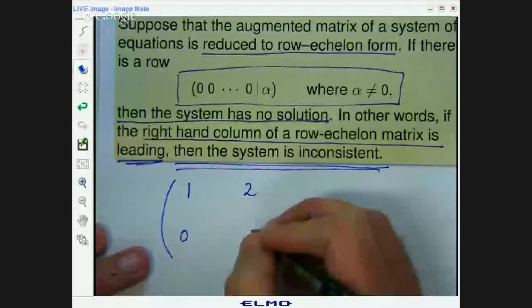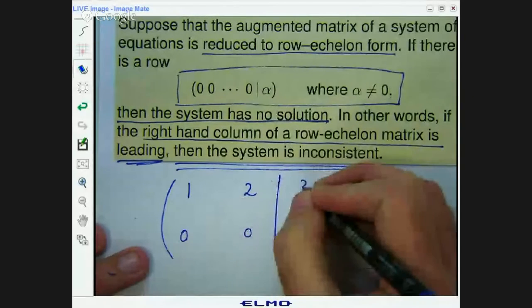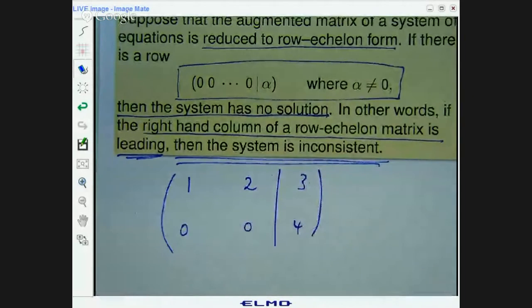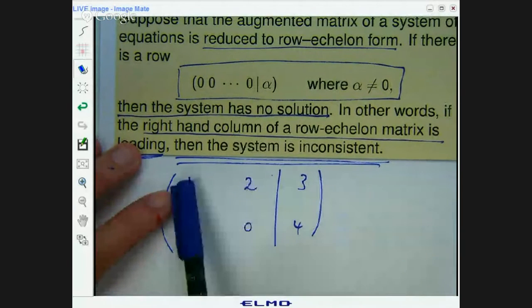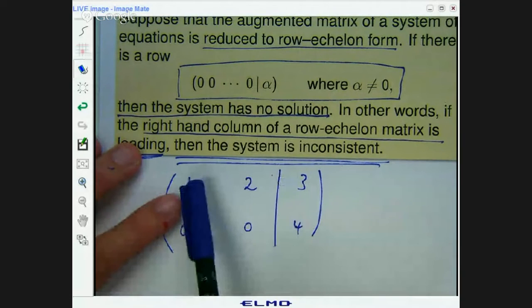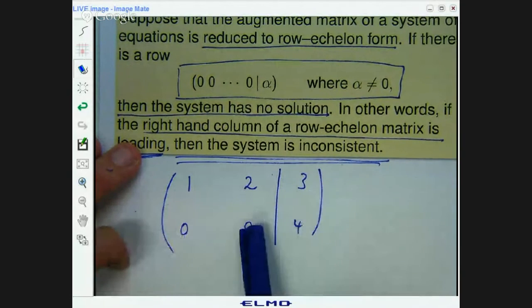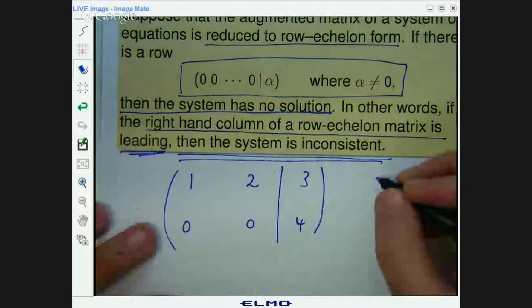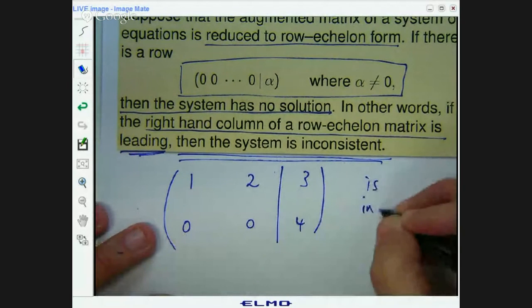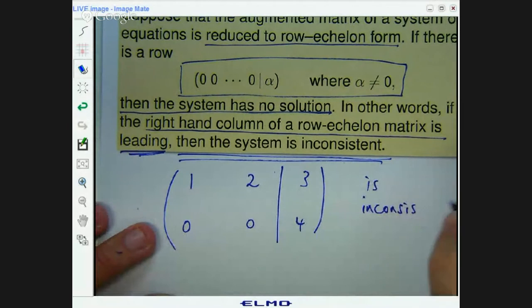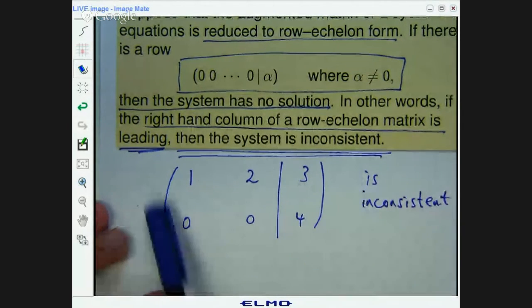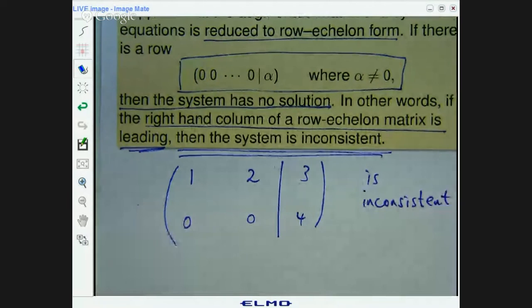So in other words if the right hand column of the row echelon matrix is leading, then the system has no solution, the system is inconsistent. So let me show you a real basic example. So let's say you were doing your system and you had it like this. So that's a row echelon form. The first row says 1x1 plus 2x2 equals 3. The second row says 0x1 plus 0x2 equals 4. So we will conclude that the system associated with this is inconsistent.